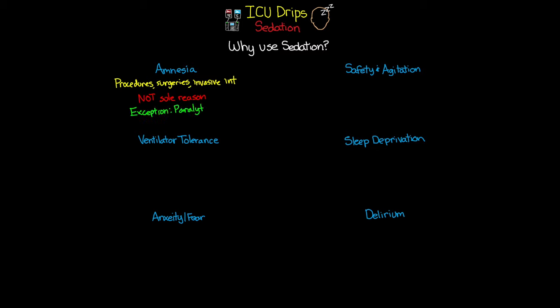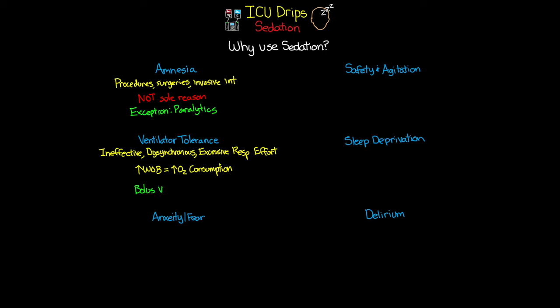The second reason is ventilator tolerance. If we have ineffective, dyssynchronous, or excessive respiratory effort, this can increase our patient's work of breathing and ultimately increase O2 consumption. We really want to identify the cause and try to improve the patient's tolerance before moving into sedation. Once we do need sedation, we can use it in frequent boluses or as a continuous IV drip.